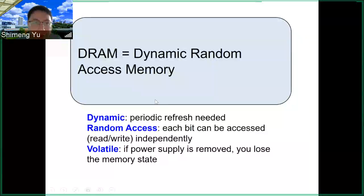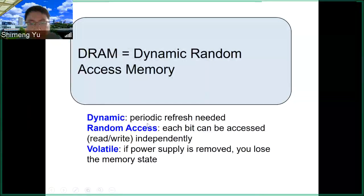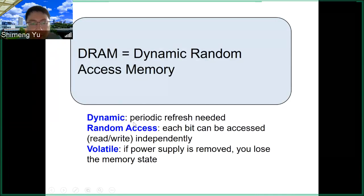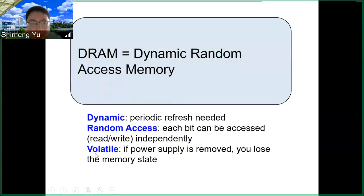A few key features of DRAM: the word 'dynamic' means DRAM performs periodic refresh — we'll discuss this in more detail later today. This contrasts with 'static' in SRAM, where you don't need periodic refresh. In DRAM we need to dynamically refresh the data before it is lost. DRAM is a random access memory, meaning each bit in the memory array can be accessed — read or written — independently. DRAM is also a volatile memory, meaning if the power supply is removed, you will lose the memory state and the data will be gone.